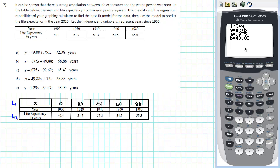We can see that the best fit linear model for this data has the form Y equals AX plus B, where the value of A is 0.075 and B is equal to 49.88.